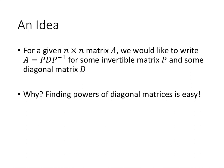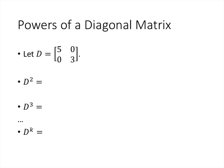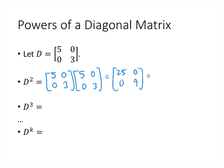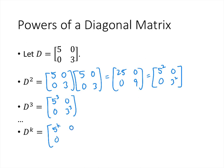Why would we want to do that? Finding powers of a diagonal matrix is easy. For example, if we square the 2-by-2 diagonal matrix with entries 5, 0, 0, 3, we get 25, 0, 0, 9 — that's just 5 squared and 3 squared on the diagonal. In general, raising this matrix to any power k gives 5^k and 3^k on the diagonal, letting us compute the power without doing full matrix multiplication — saving many operations as matrices get larger.